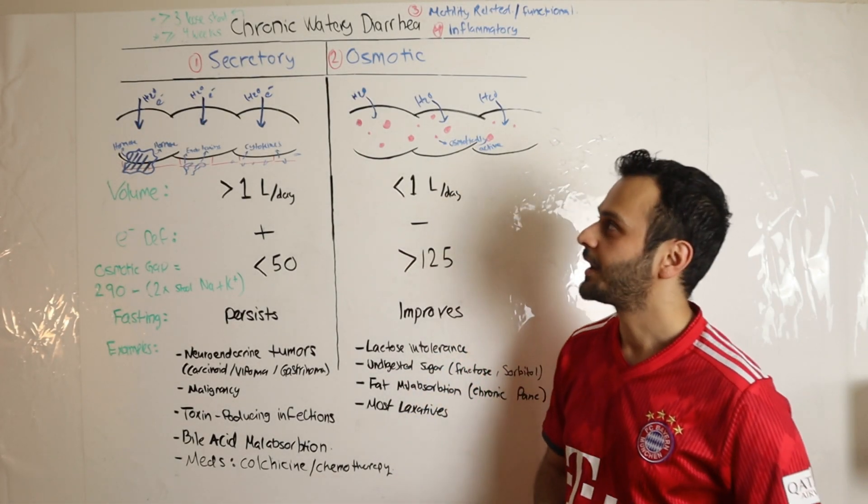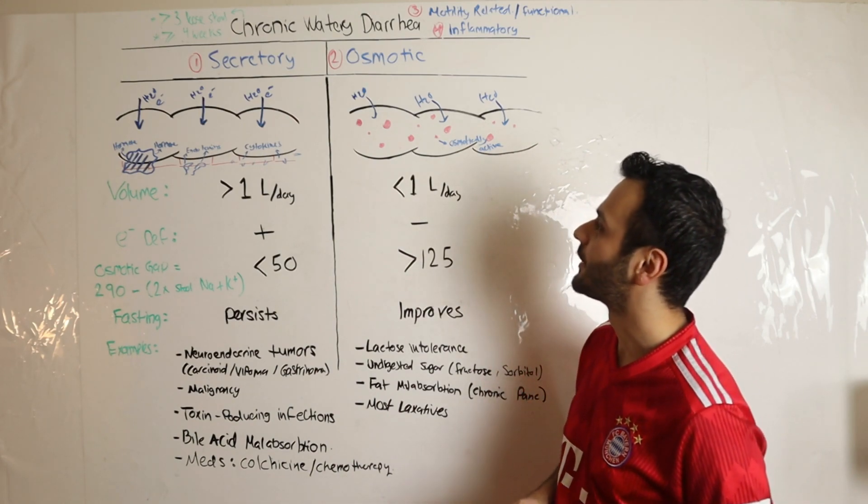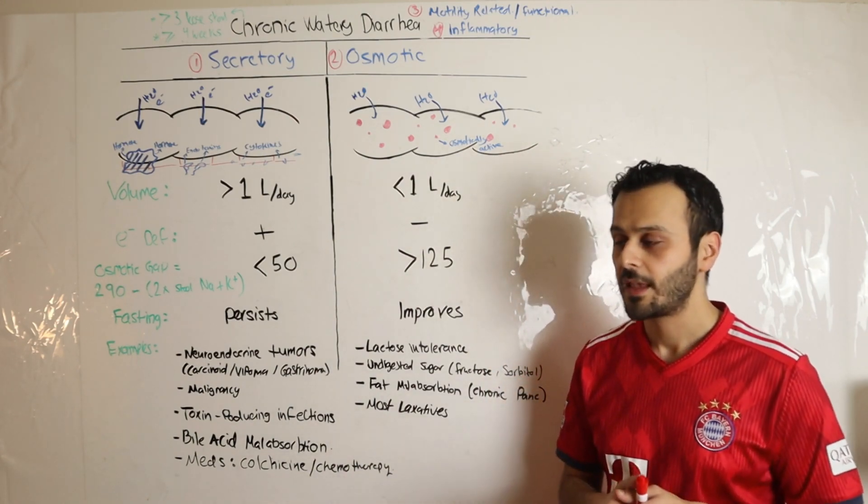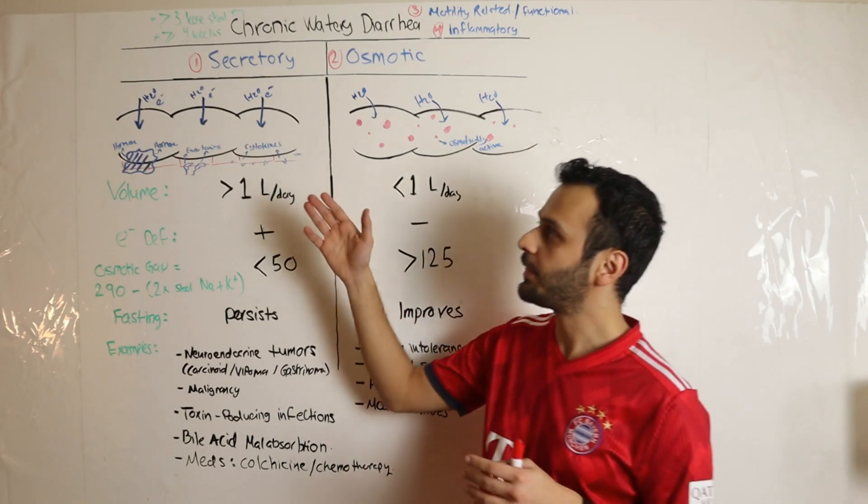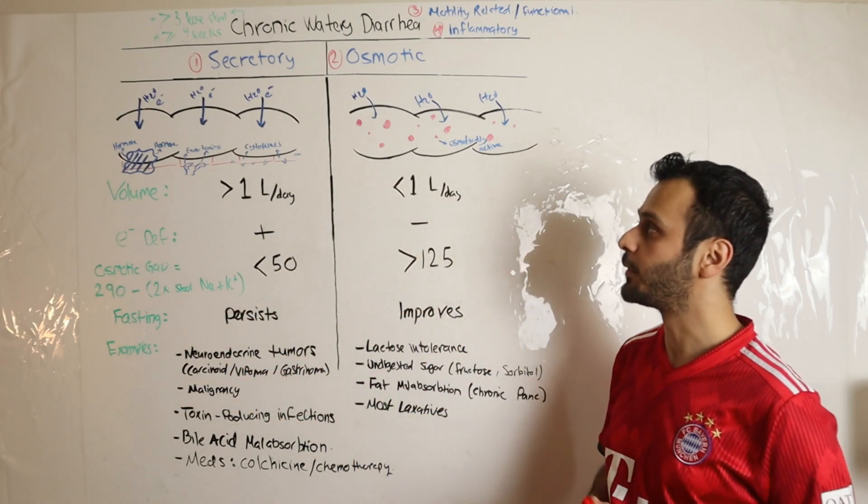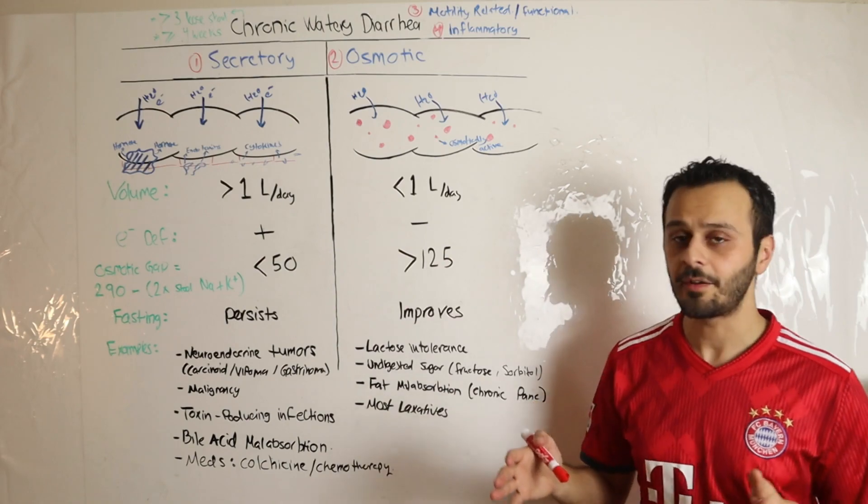Hello everyone, in today's video we're going to be talking about chronic watery diarrhea. I like to define chronic diarrhea by more than three loose bowel movements in four or more weeks.